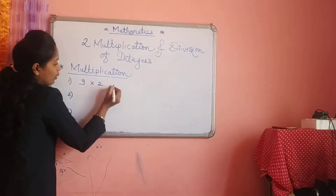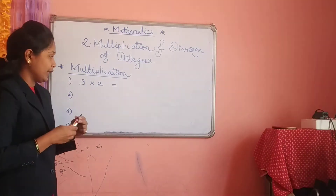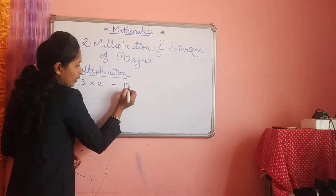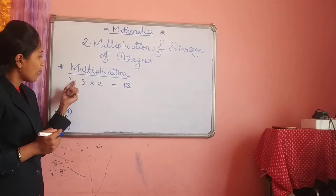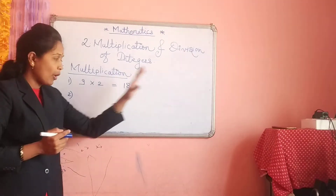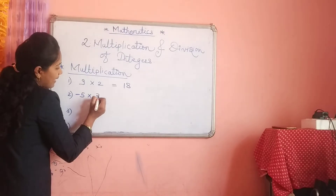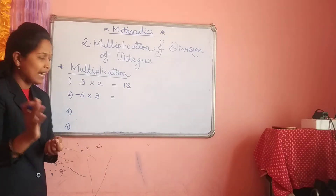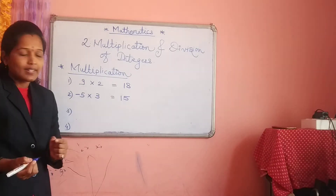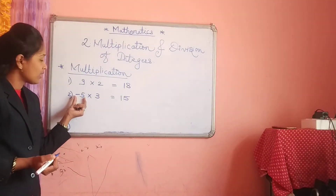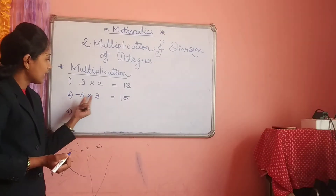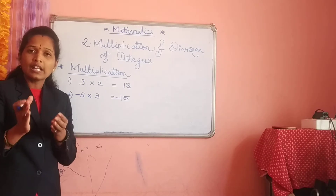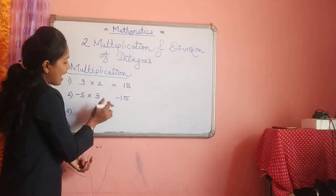Suppose numbers are given: 9 multiplied by 2. Both numbers are positive — 9 is positive and 2 is positive. Do the multiplication: 9 twos are 18. Both numbers are positive, so your answer is also positive. Next: minus 5 multiplied by 3. One number is negative and another number is positive. Do the multiplication first: 5 threes are 15. Now pay attention to the sign — if one number is negative and another is positive, the answer gets a negative sign. So the answer is minus 15.